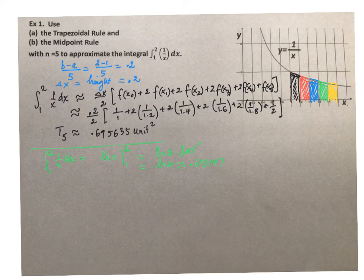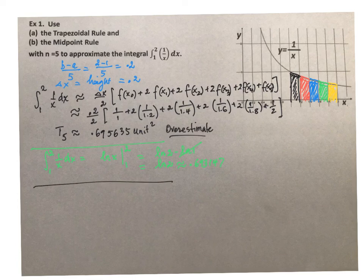If we compare the approximation using the trapezoidal rule with five subintervals or five trapezoids, we can see that it is an overestimation, a little bit over the actual value. Now I would like you to use for part b the midpoint rule to estimate the area under the curve with five subintervals. So five rectangles under the curve.